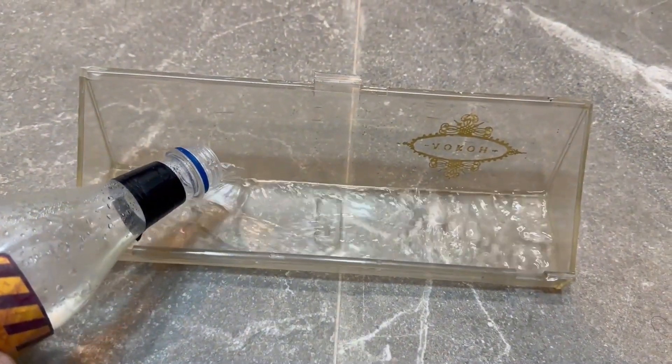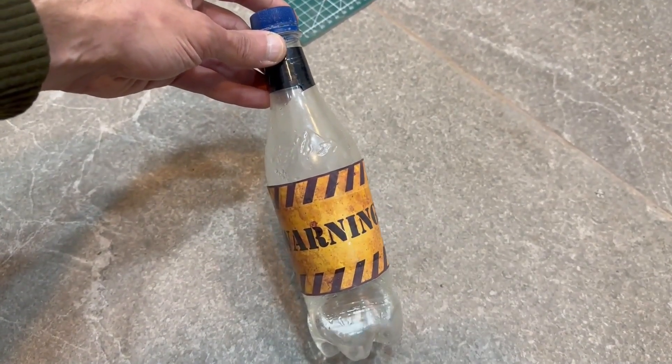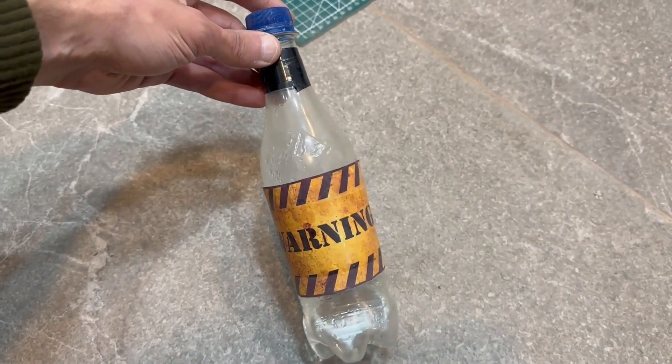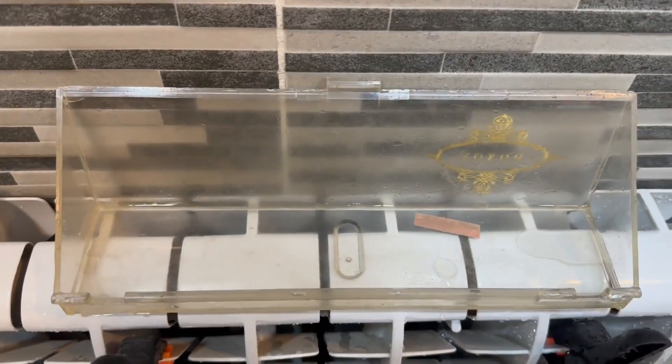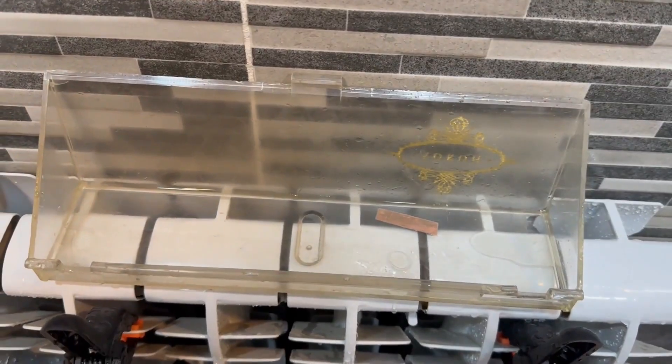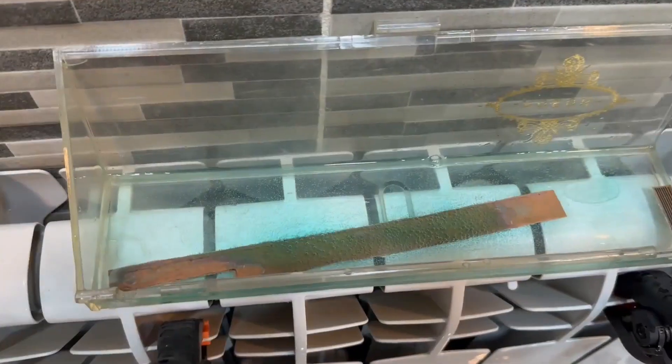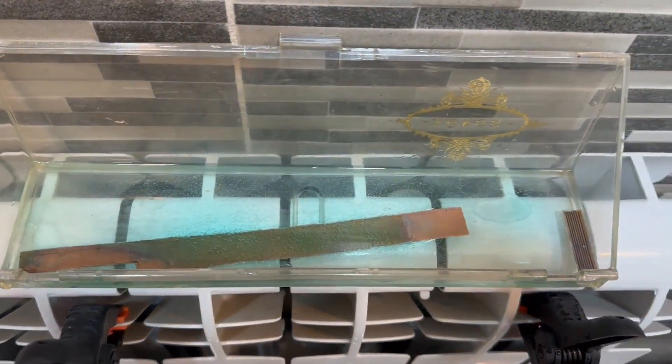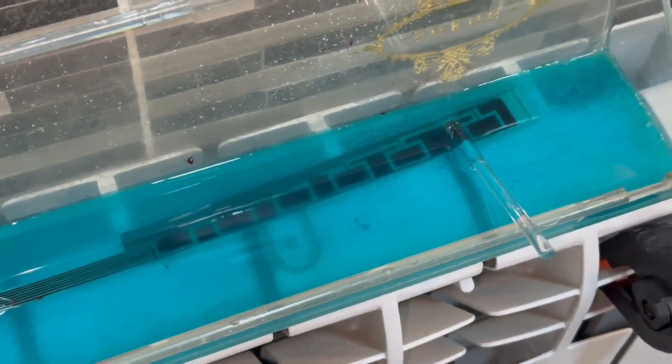I almost always use citric acid and hydrogen peroxide for etching. The solution is not a secret. You can find a ton of information online about preparation, proportions, and so on. Pour it into a container and place it on the heating radiator. When heated, the process goes more smoothly. I need to etch both the main side of the tracks and the second side completely, as my PCB is double-sided. After some time, everything is ready.